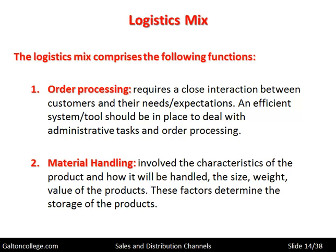Material handling looks at the characteristics of the product and how it will be handled — the size, weight, and value of the products. These determine the storage requirements. If it's a big product, it will need more storage; if it's very heavy, it will need specialty equipment to move it. So it all depends on the nature of the product being produced, but the company must have provisions for material handling.